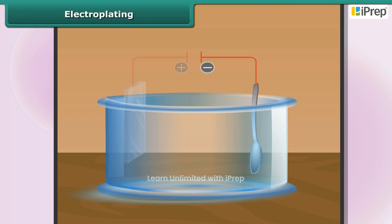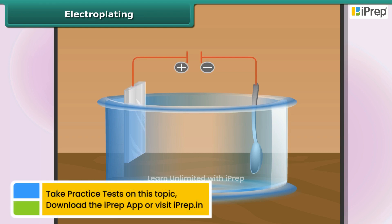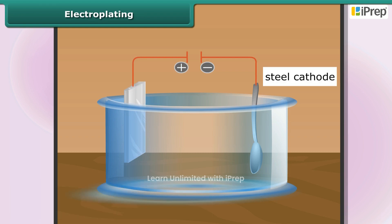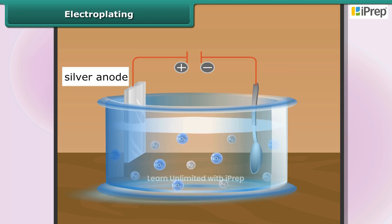The positive terminal is connected to the bar of metal, for example pure silver. Thus the spoon acts as the cathode in the electrolysis, while the bar of metal acts as the anode. The electrolyte is a solution of salt.